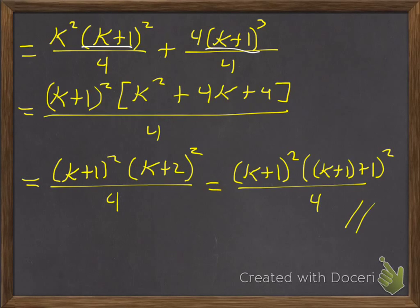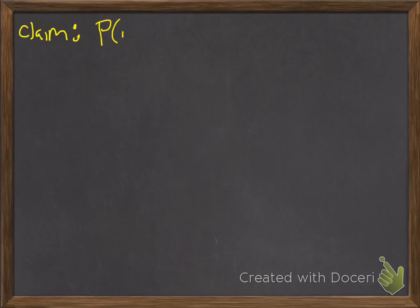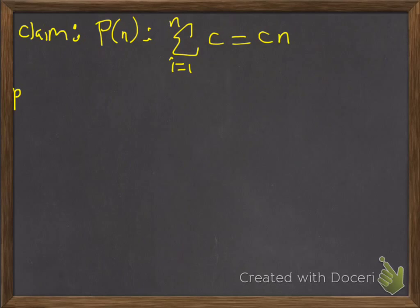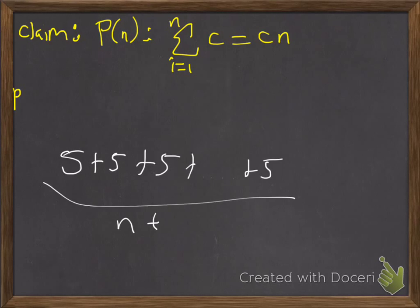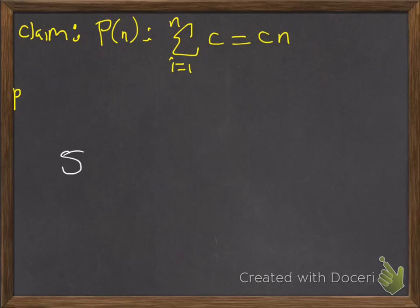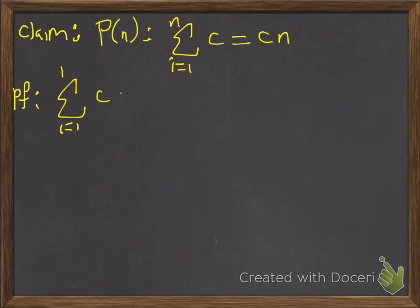There's one other formula I skipped over — it's an easy one. The claim: P(n) is the statement that if I add up the constant c n times, it's just going to be c times n. So for example, if c were 5, it would be 5 plus 5 plus 5, n times, which is just 5 times n. For the base case, the sum from i equals 1 to 1 of c is just c, and that equals c times 1, so that's good.